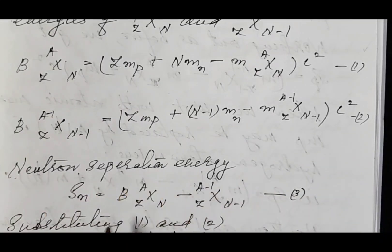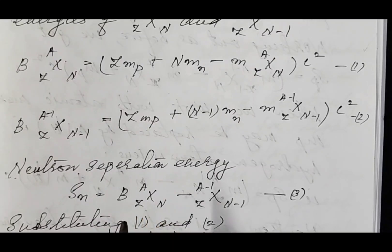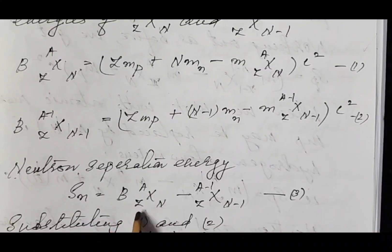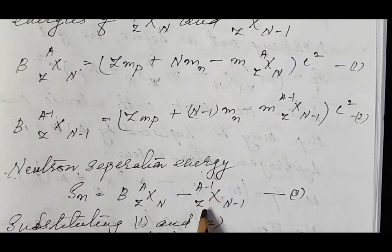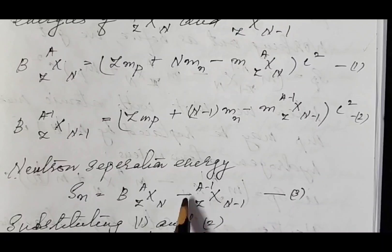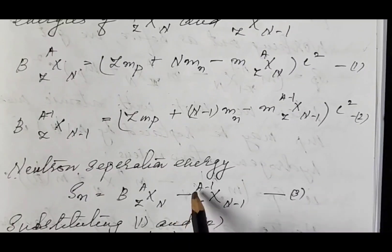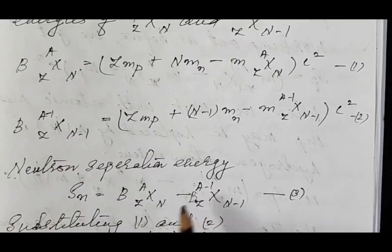Then, neutron separation energy S_N is the difference between the binding energy of the first nucleus and the binding energy after removal of the neutron — that is, B[X(A,Z,N)] minus B[X(A−1, Z, N−1)]. Let us call this equation 3.